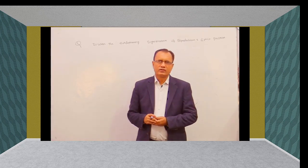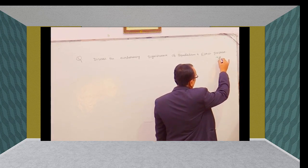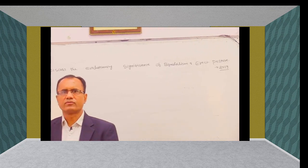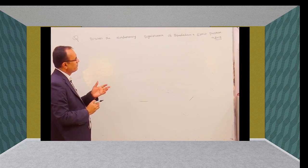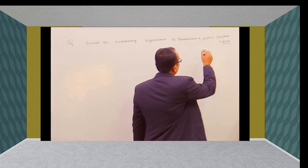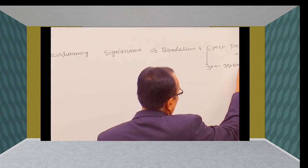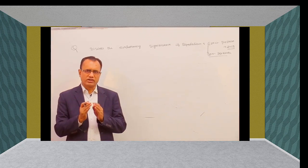Now we are going to learn another question which was also asked in 2019. This is a long question in Anthropology. First, try to see the question: 'Discuss the evolutionary significance of bipedalism and erect posture.' You have to write your answer because it is a long question, so you have to write your answer in 300 to 350 words, not more than that.